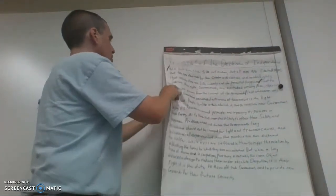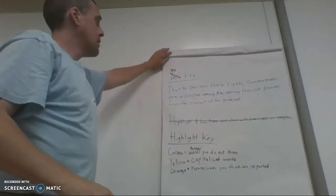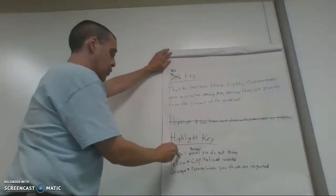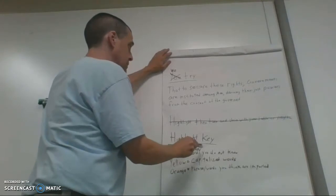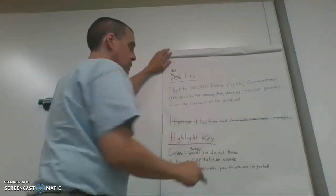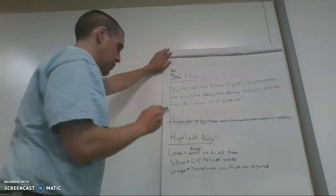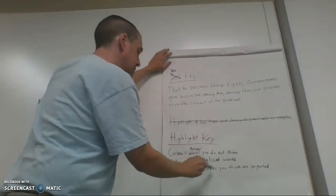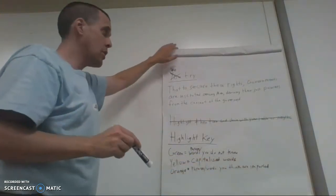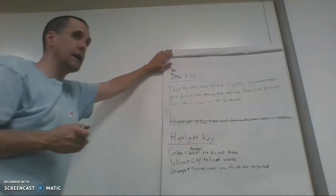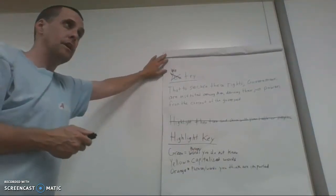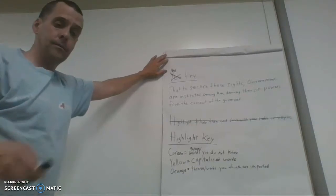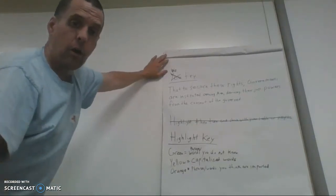So now this time we're going to do this one together. And remember, for green are words and phrases that you do not know. So there's something in this one that confuses you, you're going to do it in green. We're going to do it together, but we're going to do that one in green. For the yellows are capitalized words and our orange is our phrases, words you think are important. So let's take a look at this and I would like you guys to take a minute to read it to yourself. And then we're going to work on this one together. Okay, great. So your minute's up.